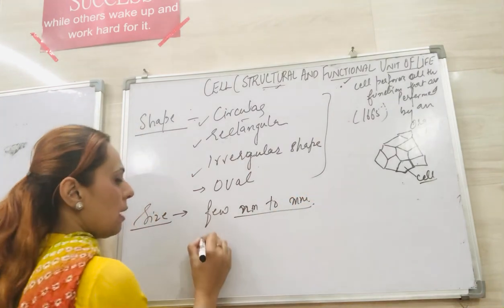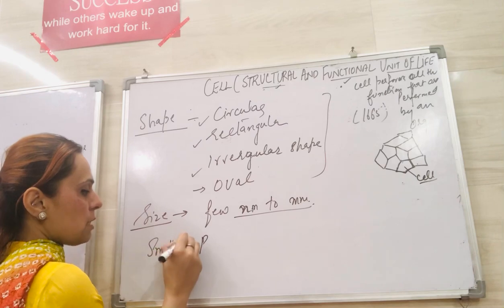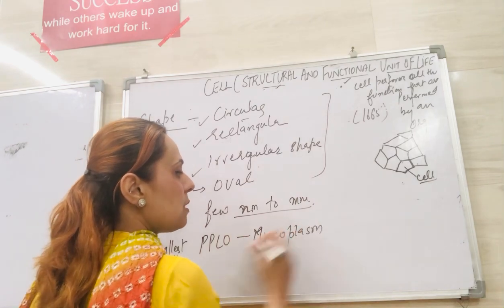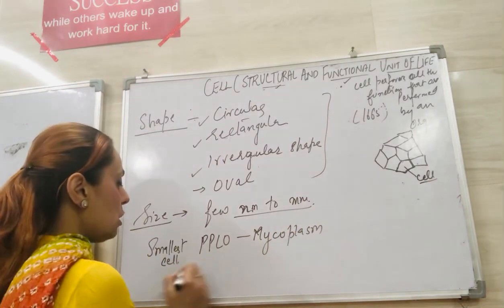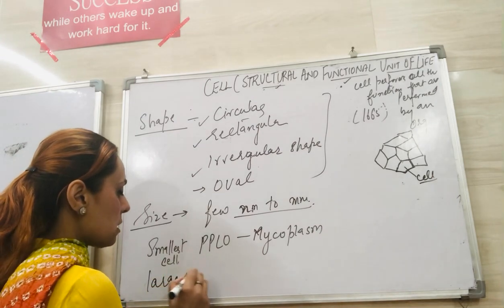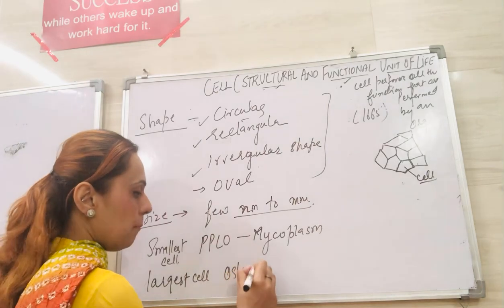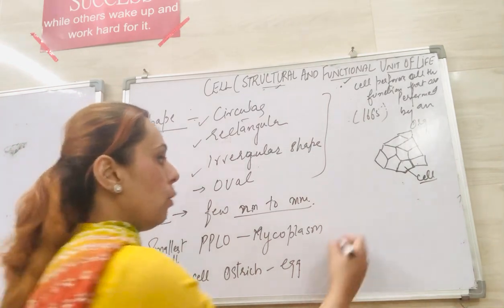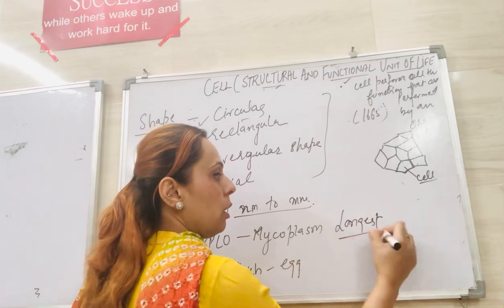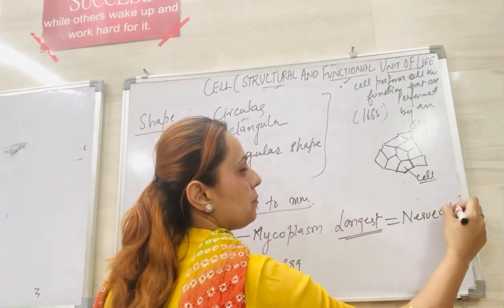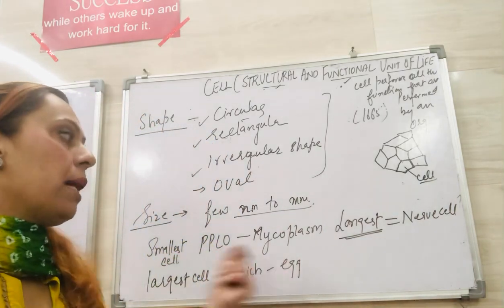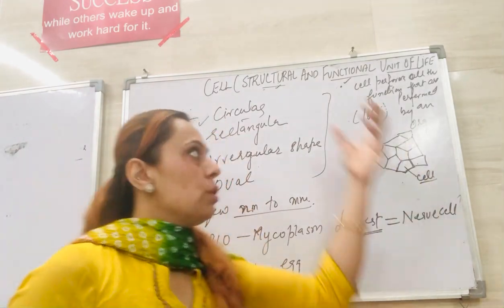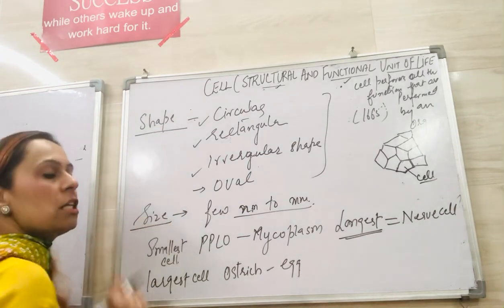The smallest cell we have is PPLO, also called Mycoplasma. The largest cell is the ostrich egg. There is a difference between largest and longest — the longest cell is the nerve cell. So to remember: smallest cell is Mycoplasma or PPLO, largest cell is an ostrich egg, and the longest cell is a nerve cell.